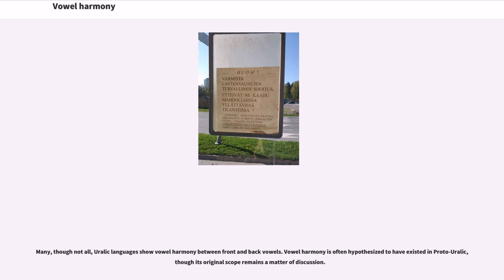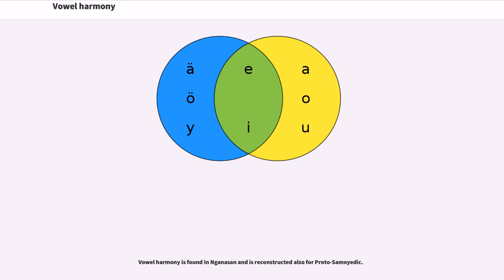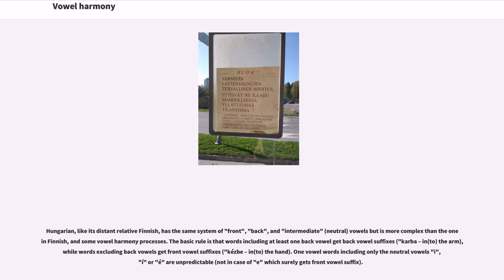Many, though not all, Uralic languages show vowel harmony between front and back vowels. Vowel harmony is often hypothesized to have existed in Proto-Uralic, though its original scope remains a matter of discussion. Vowel harmony is found in Nenets and is reconstructed also for Proto-Samoyedic. Hungarian, like its distant relative Finnish, has the same system of front, back, and intermediate vowels but is more complex. The basic rule is that words including at least one back vowel get back vowel suffixes, while words excluding back vowels get front vowel suffixes. One-vowel words including only the neutral vowels I and E are unpredictable.